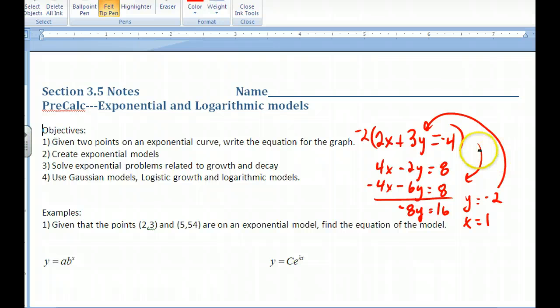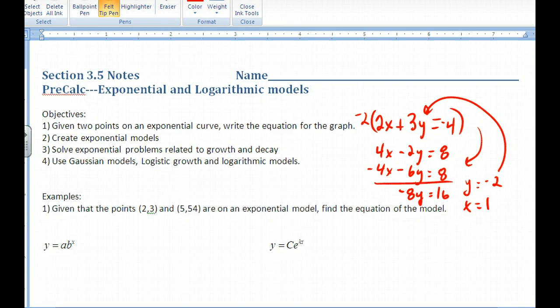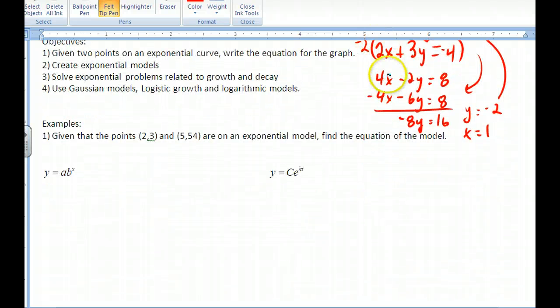So we solve for both x and y. Eliminate one of the variables, solve for the one that remains, and then back substitute to figure out what the other one is. That is the same exact thing that we're going to be doing with these exponential equations. Instead of elimination by adding the opposite, we're going to have multiplication.